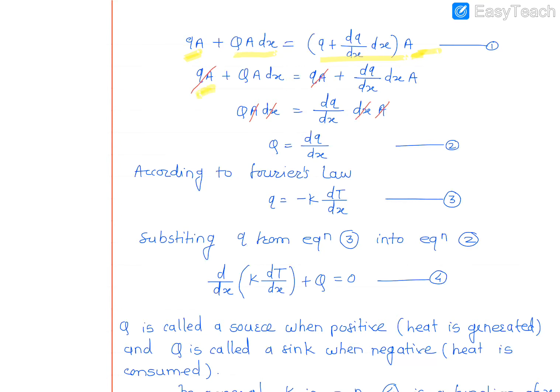Again, A and dx will get cancelled, and Q = dQ/dx. Now according to Fourier's law, we have Q = -K·dT/dx.